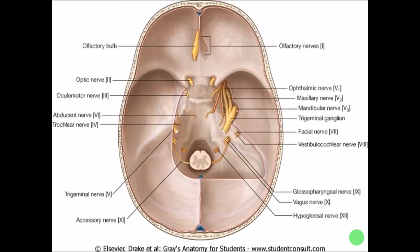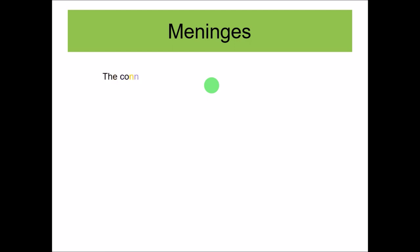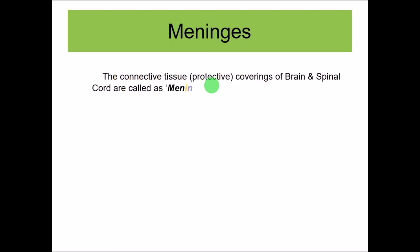This is the cranial cavity cut inside with the brain removed. You can see one of the meninges and all the cranial nerves here, showing how they are leaving the cranial cavity and entering different parts of the body. The meninges are the connective tissue layers which cover and protect the brain as well as the spinal cord.